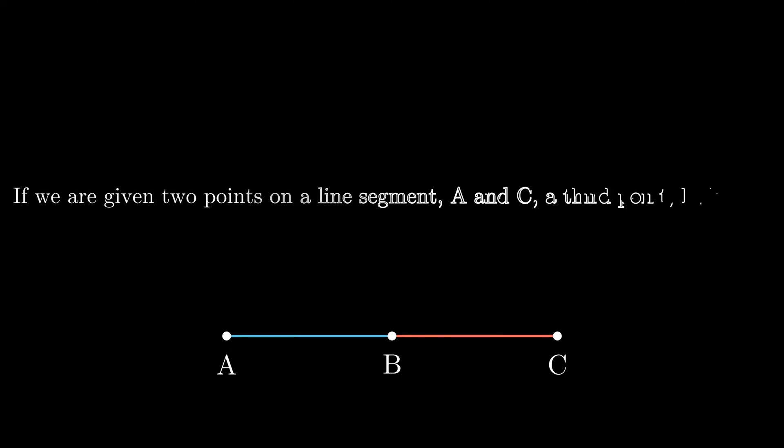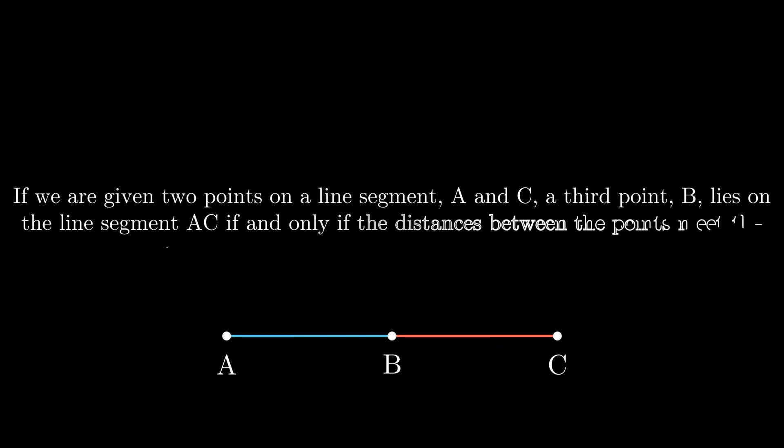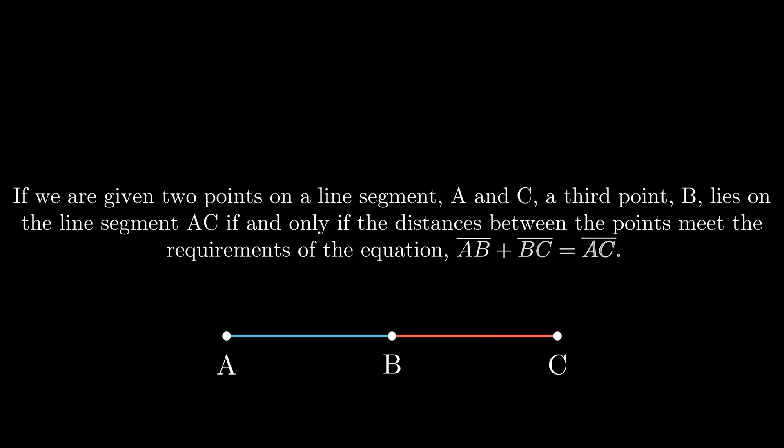The formal definition is that if we are given two points on a line segment A and C, a third point B lies on the line segment AC if and only if the distances between the points meet the requirements of the equation AB plus BC equals AC. Remember, the line above the letters are used to indicate a line segment.